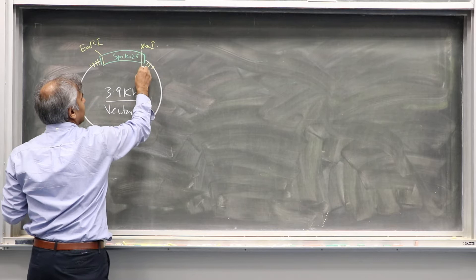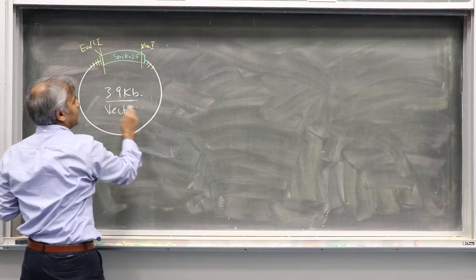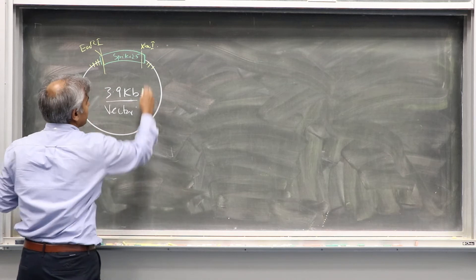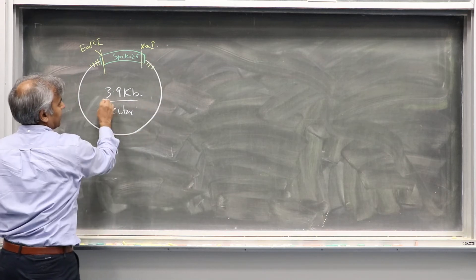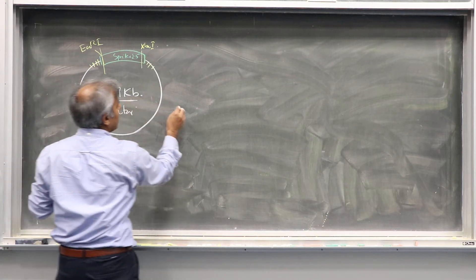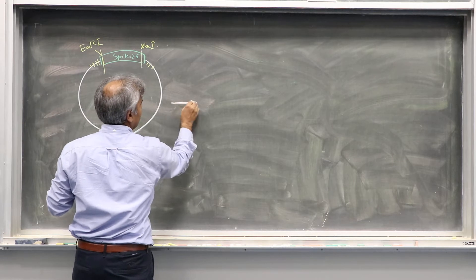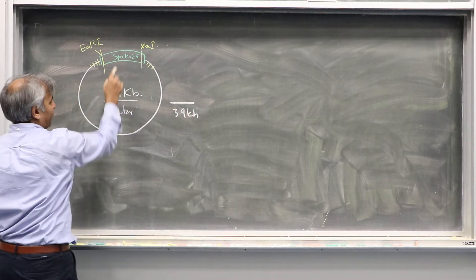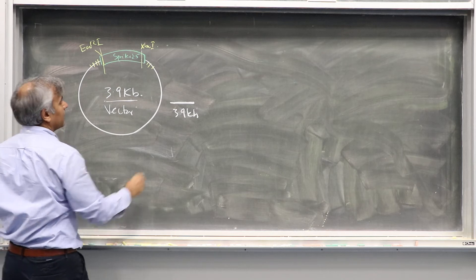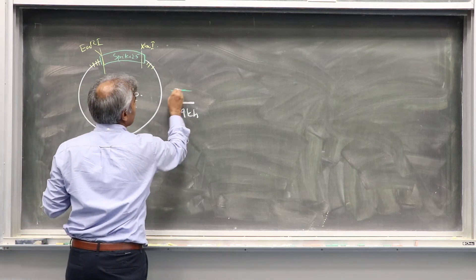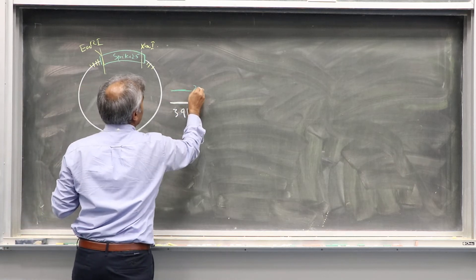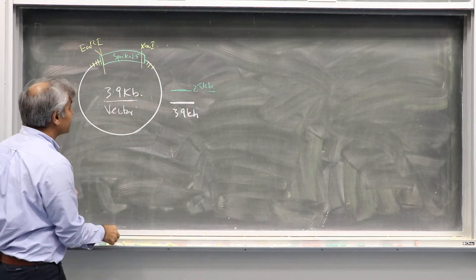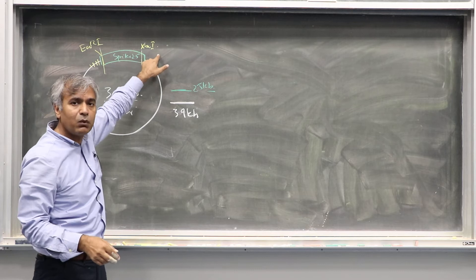XbaI will cut here and EcoR1 will cut here. One fragment will be this whole vector, which is 3.9 KB. So one expected fragment you will see is 3.9 KB. The other fragment will be your spike gene, which is 2.5 KB. These are the expected fragments if you use EcoR1 and XbaI.